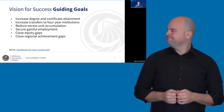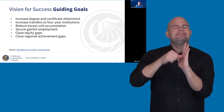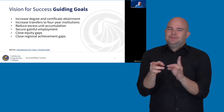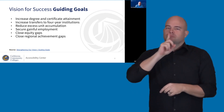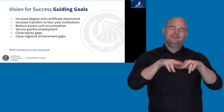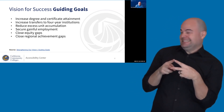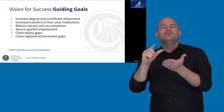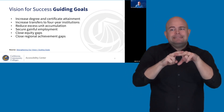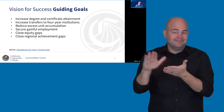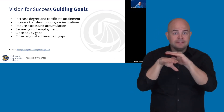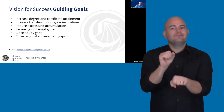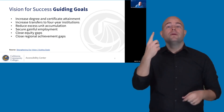I wanted to highlight the connection between our accessibility efforts and the Vision for Success guiding goals. A number of these guiding goals are directly related to our work to increase accessibility — especially the first two: increasing degree and certificate attainment, helping students succeed and graduate, increasing transfers to four-year institutions, securing gainful employment, and closing the equity gaps.